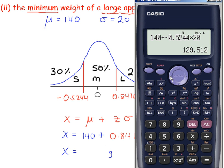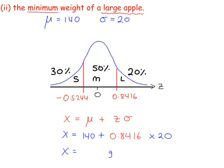Okay, again. If I put in the new Z value, 0.8416. That gives 156.8. So 156.8 grams is the minimum weight of a large apple.